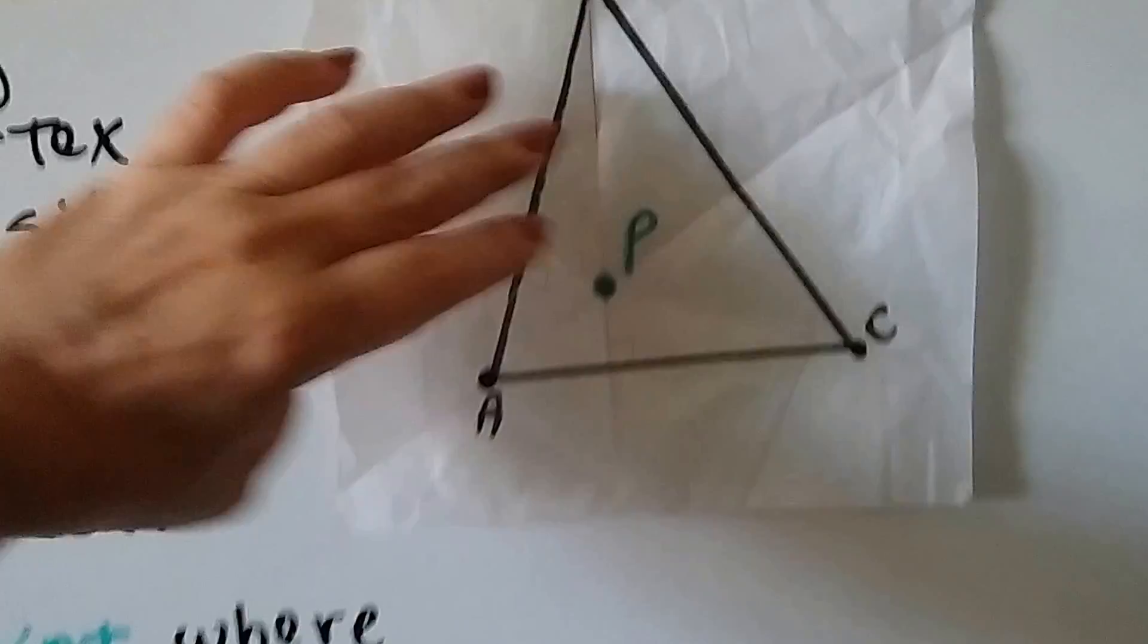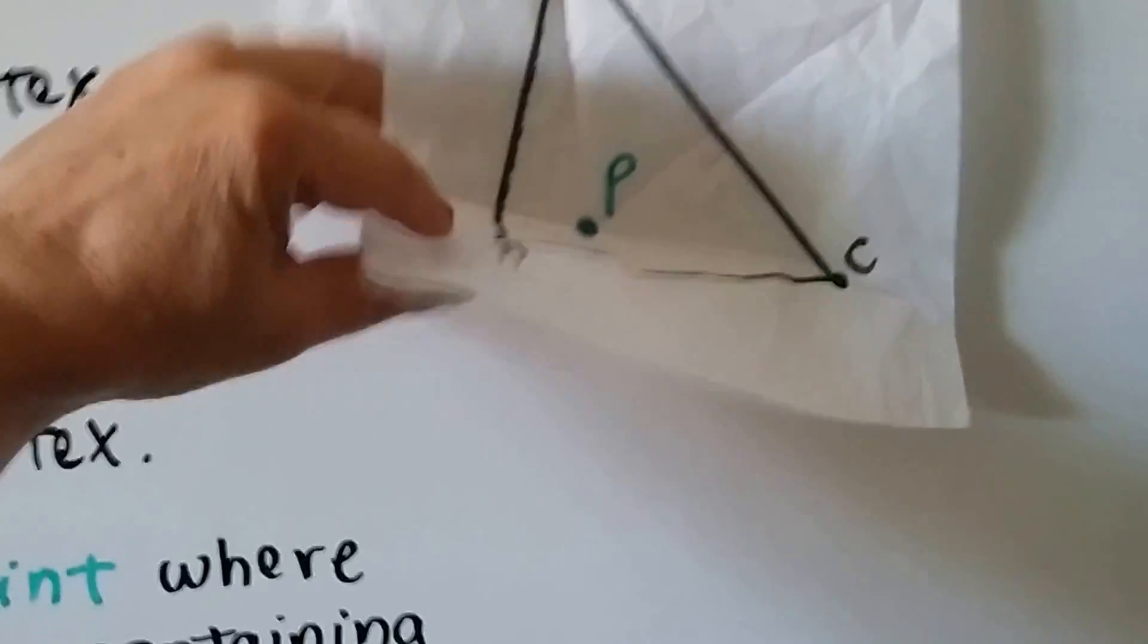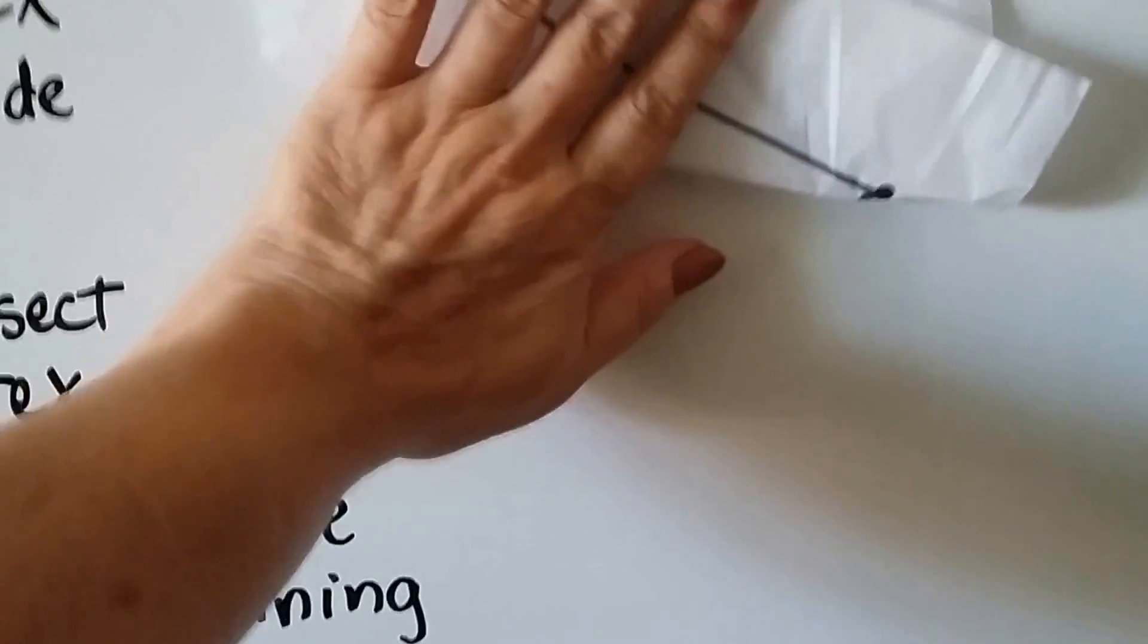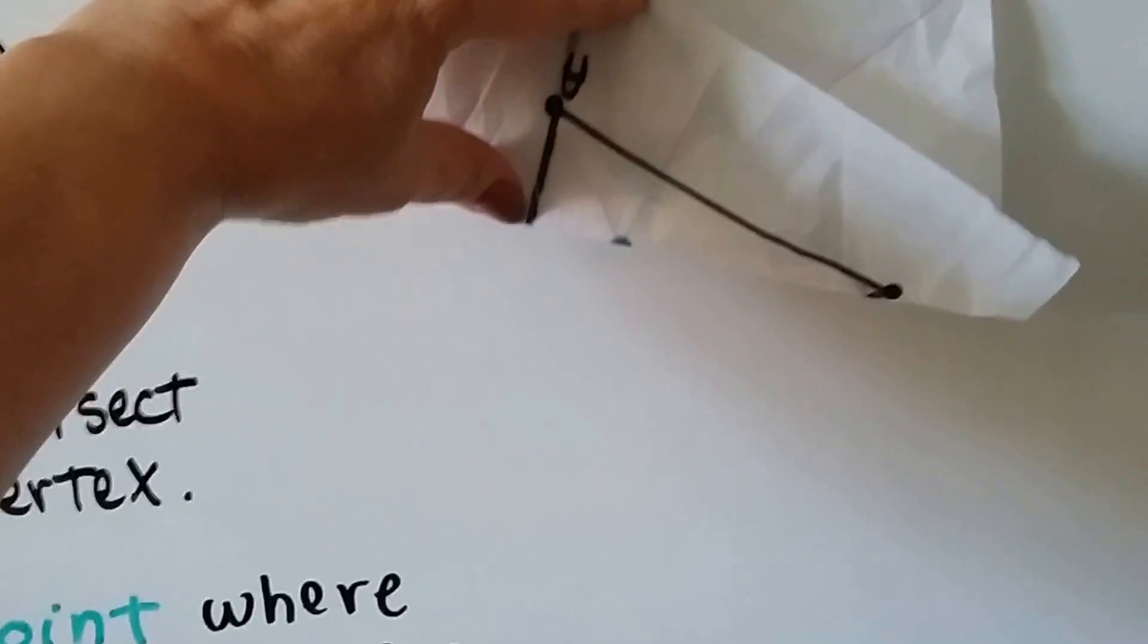And we can do C. We fold the paper this way so that this line is laying upon itself and going through the vertex of C. So it's laying on itself really nice like that.